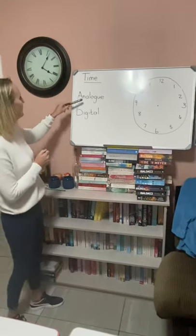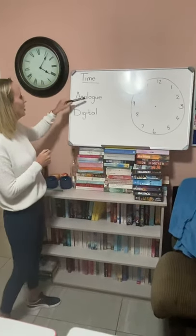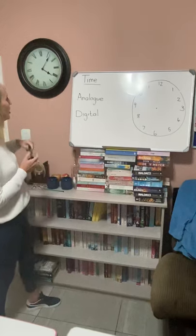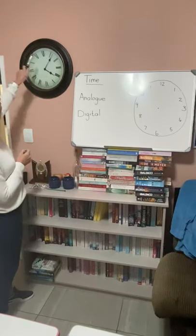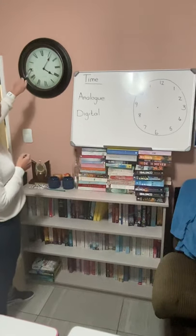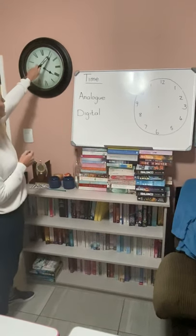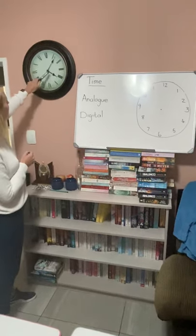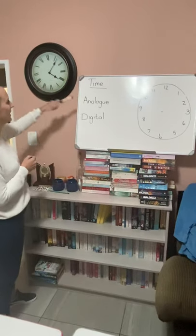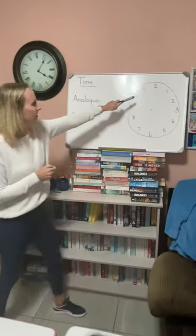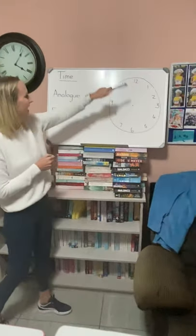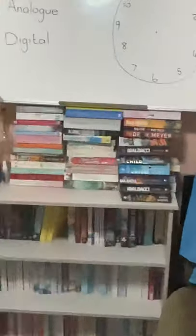So we first look at analog. An analog clock would be like this — sorry, this one's in Roman numerals — but anything that's got the minute hand and the hour hand like this is an analog clock.